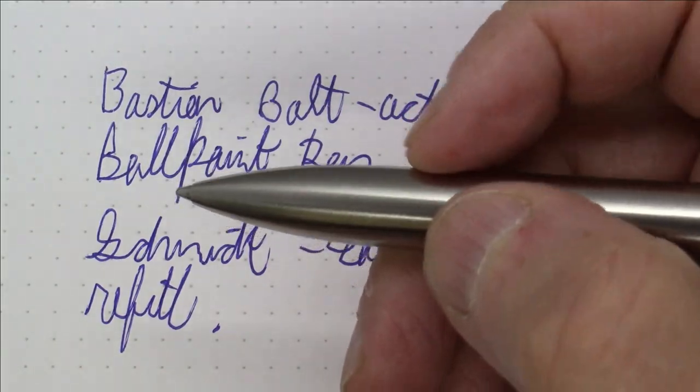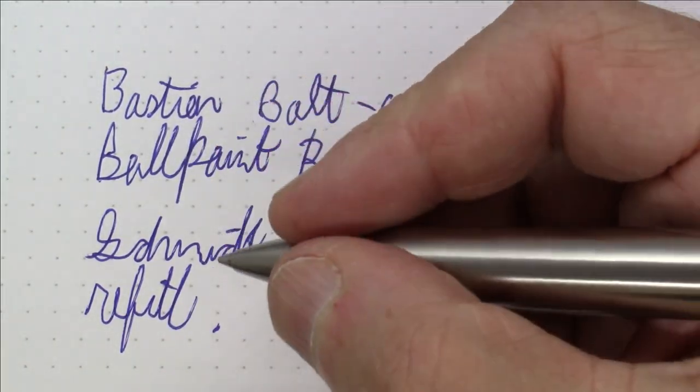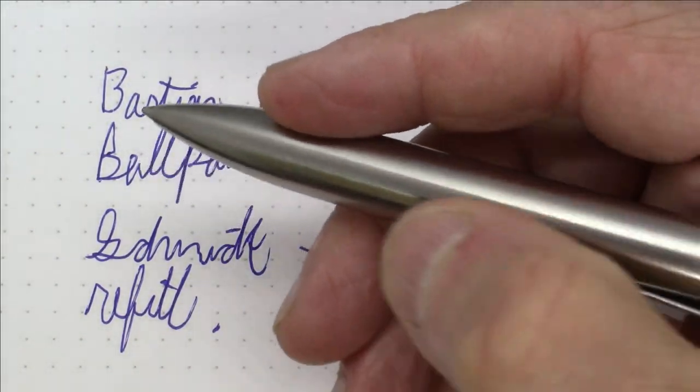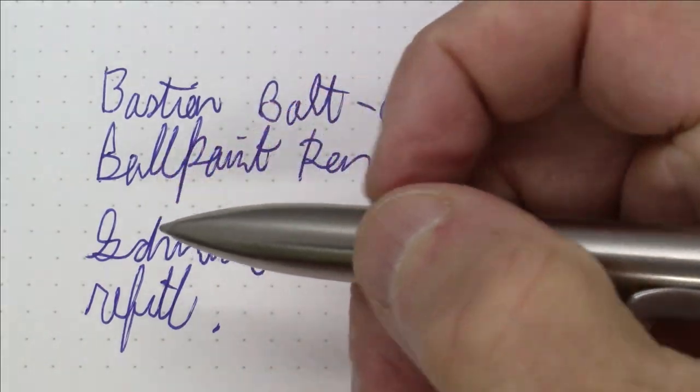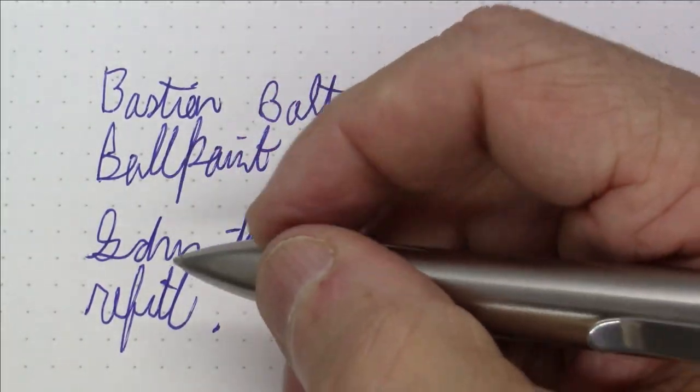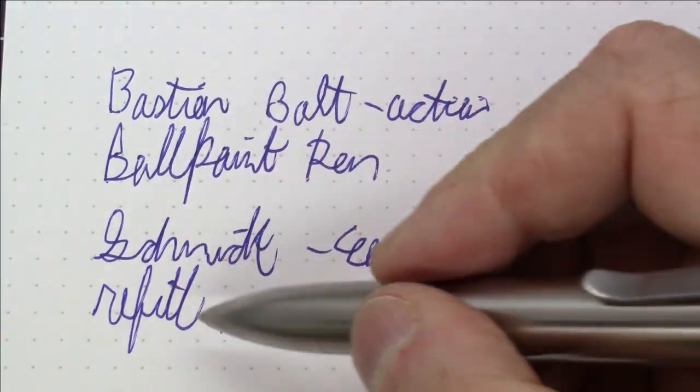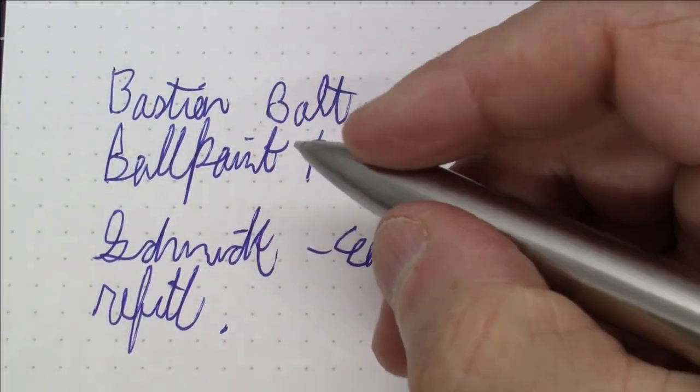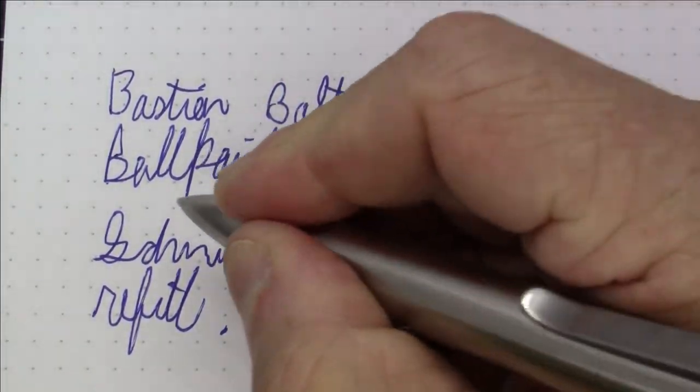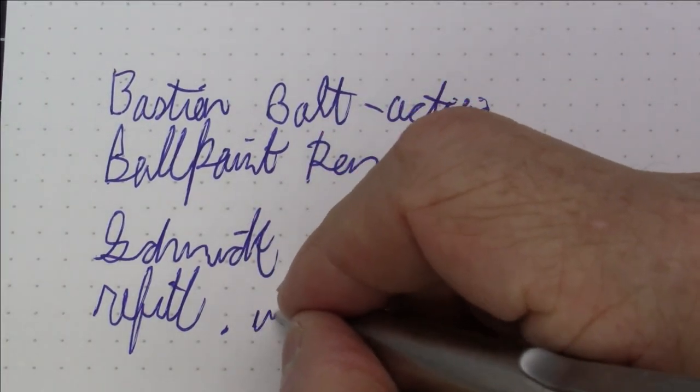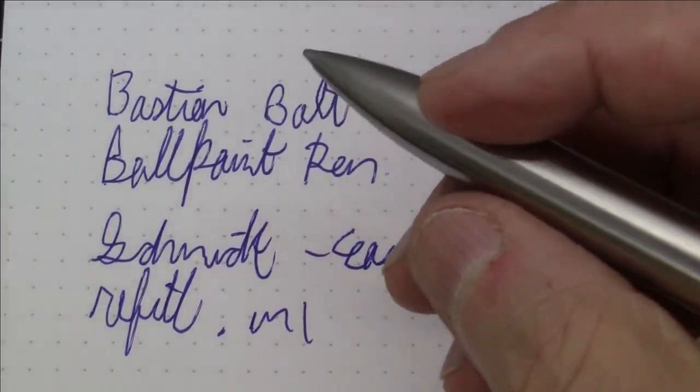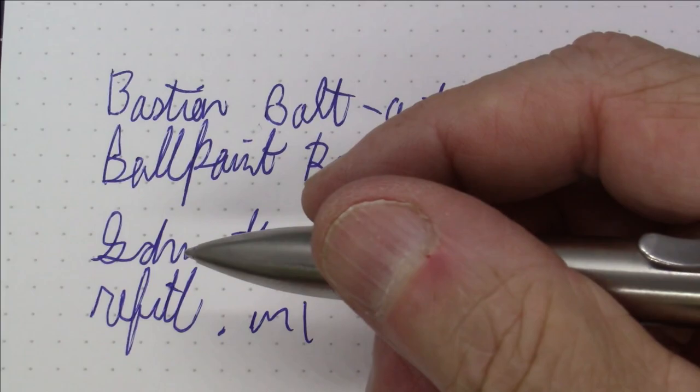This is pretty comfortable in the hand. It doesn't have any sort of defined section, so because the whole look is designed to just kind of come down here, you don't have any kind of defined section. This means you can hold it as high or as low as you want. It does also mean you don't have anything to put your finger against if that's important to you. It doesn't really matter to me but I could see that for some people might be an issue.